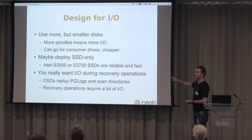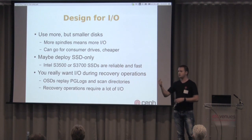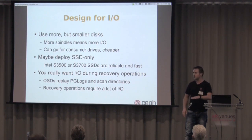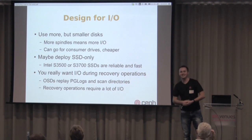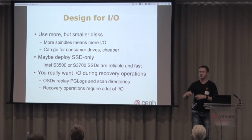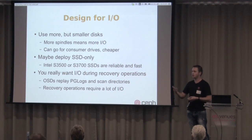You also want to look at recovery operations. Whenever a machine fails, the other machines have to copy data to each other. During recovery, IO starts spiking because the other OSDs have to read all PG logs and start transferring data. Under normal circumstances IO load may be low — health OK — and then suddenly it goes to health warn and disaster strikes. The disks start spinning, reading data, the network gets utilized, and suddenly we see 100% utilization on all drives. Then customers call me saying it's down. It's not down — it's just busy recovering.